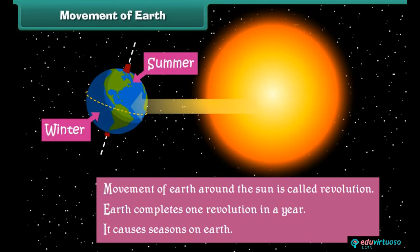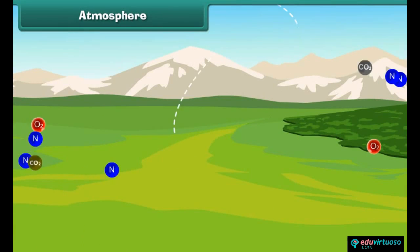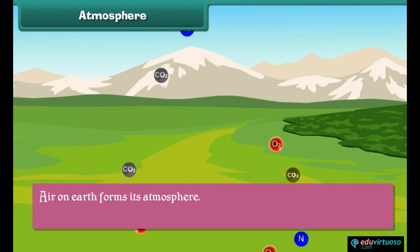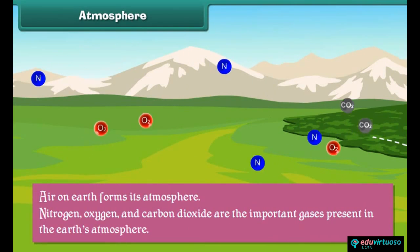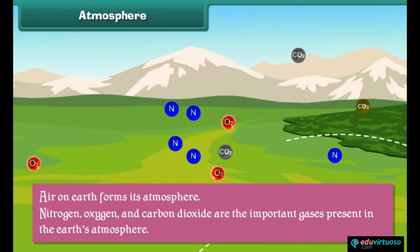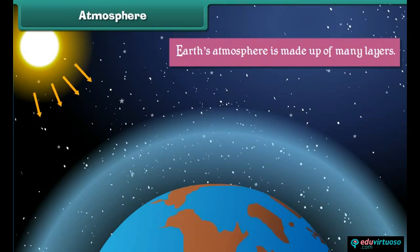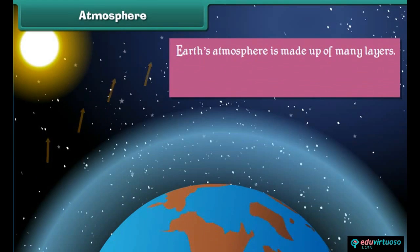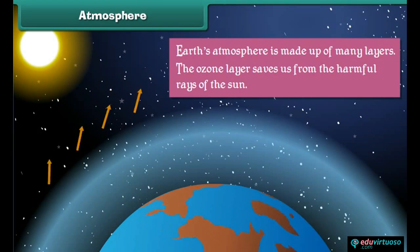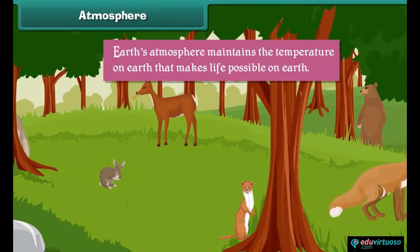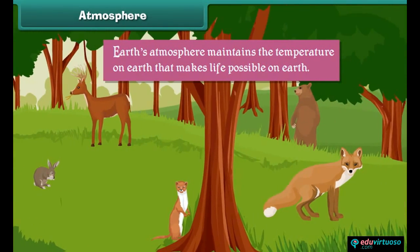Atmosphere: air on Earth forms its atmosphere. Nitrogen, oxygen, and carbon dioxide are the important gases present in Earth's atmosphere. Earth's atmosphere is made up of many layers. The ozone layer saves us from the harmful rays of the Sun. Earth's atmosphere also maintains the temperature on Earth, which makes life possible.